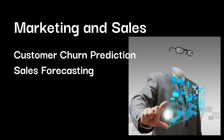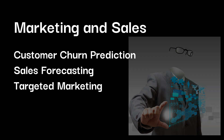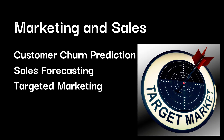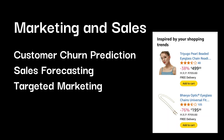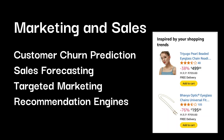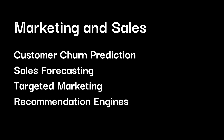Sales forecasting — predicting future sales trends and demand — helps companies optimize production and inventory. Targeted marketing means delivering the right message to the right customer at the right time. And of course, recommendation engines: those algorithms that suggest products you might like based on your past purchases. All of this is powered by predictive analysis.